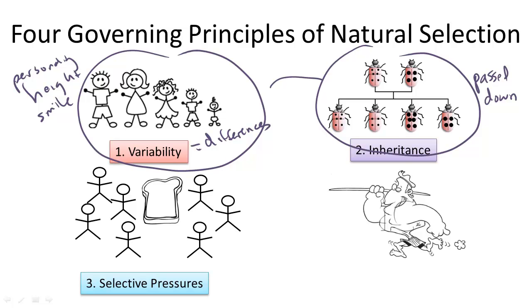The next principle of natural selection is called selective pressure. This is the idea that populations can exceed their resources. So there's too many people for this one piece of bread. And thus overpopulation can lead to competition. So fighting between these organisms, or in this case these little stick figures. And so there's this, what's called selective pressure. Either for or against certain traits. Those that have the traits that enable them to get to the food will survive. And thus bringing us to our fourth principle.